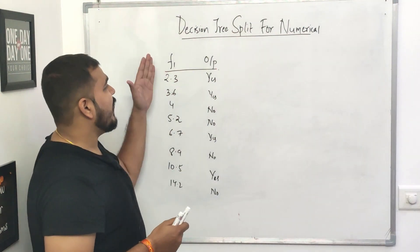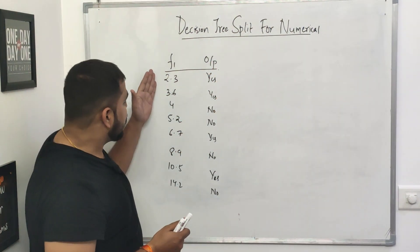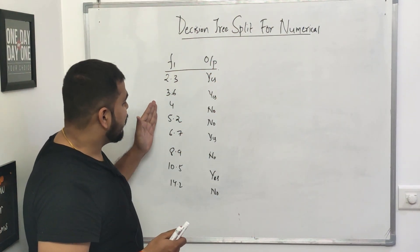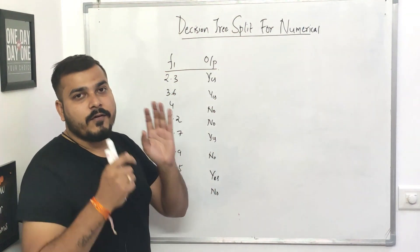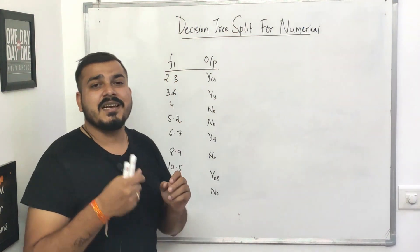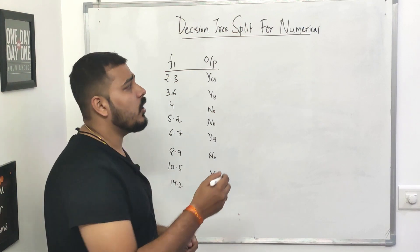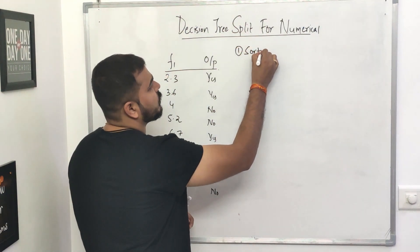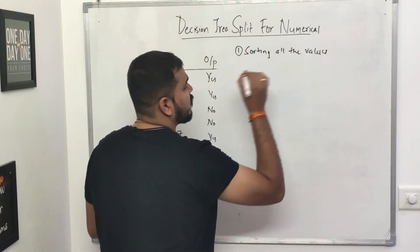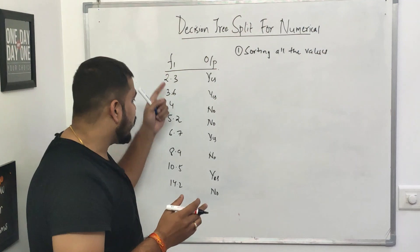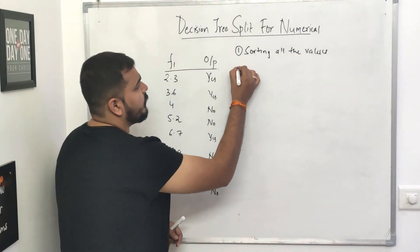Over here I have an example where I have one feature (feature one) and my output variable. In feature one you can see all numbers written in sorted order. Always remember: if your feature is a numerical variable, the first thing the decision tree algorithm will do is sort all the values in ascending order.